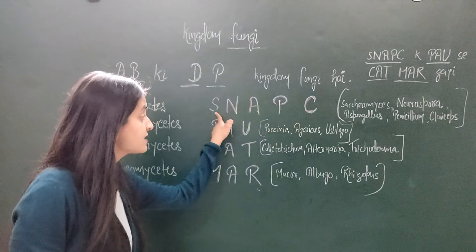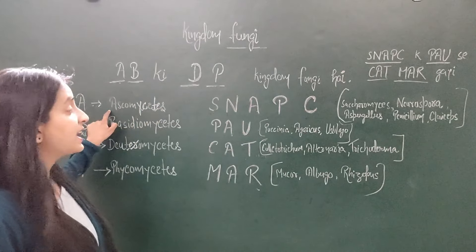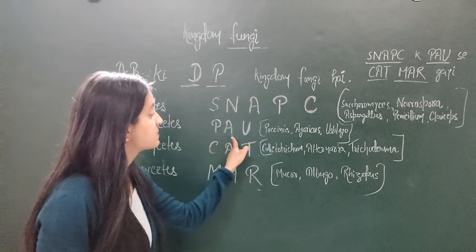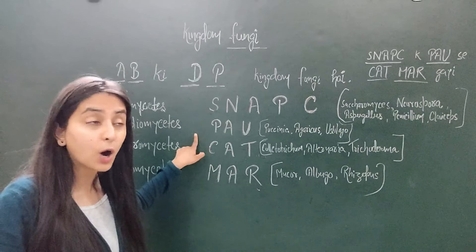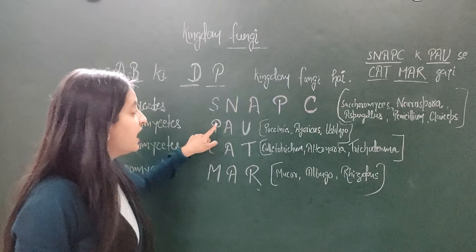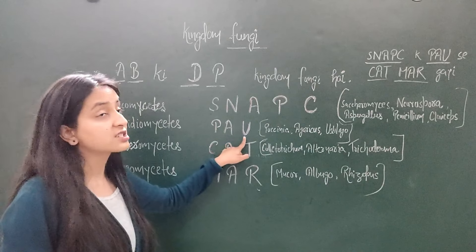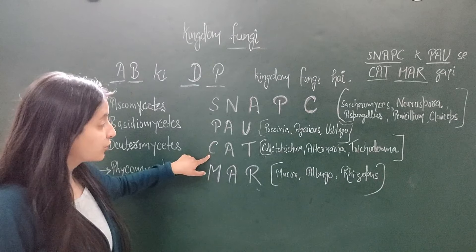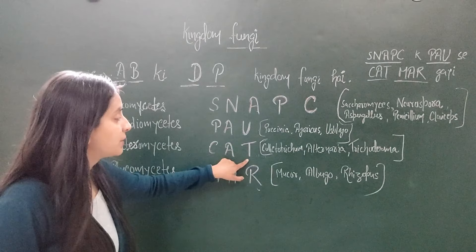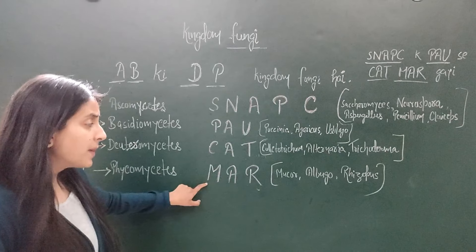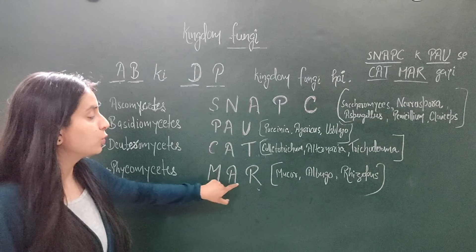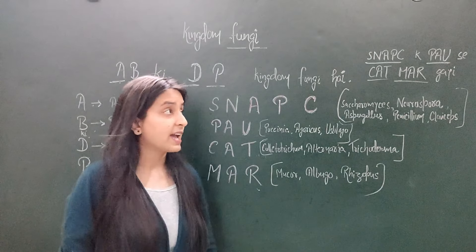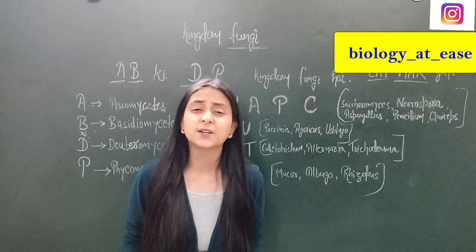AB ki DP fungi hai — Snapsi ke paon se cat mar gayi. Phir aate hain Basidiomycetes ke examples — PAO: Puccinia, Agaricus, Ustilago. Ab Snapsi ke paon se cat mari — Deuteromycetes ke examples CAT: Collidotrichum, Alternaria, Trichoderma. Cat mar gayi — MAR — Phycomycetes ke examples: Mucor, Rhizopus (Albugo), Albugo. AB ki DP fungi hai, Snapsi ke paon se cat mar gayi.